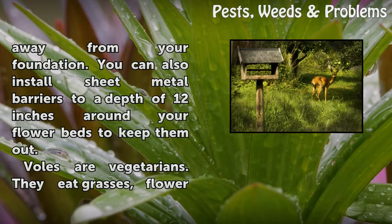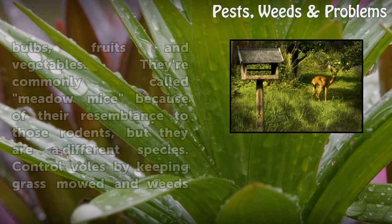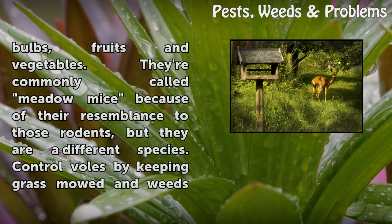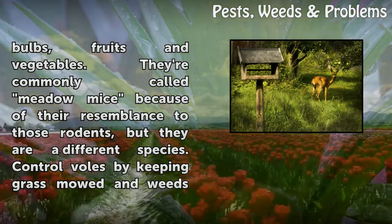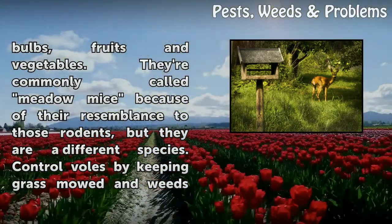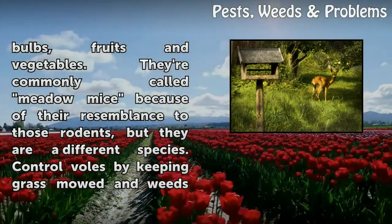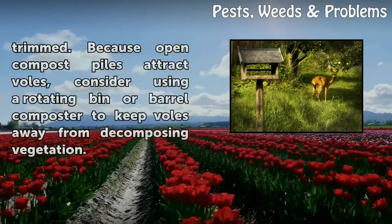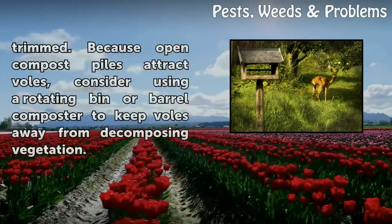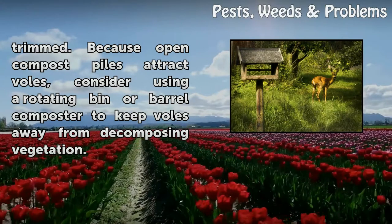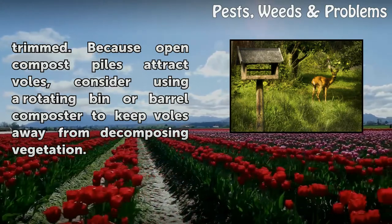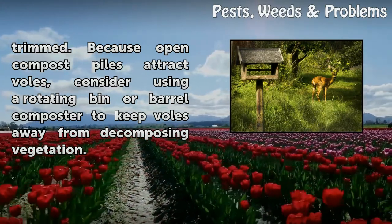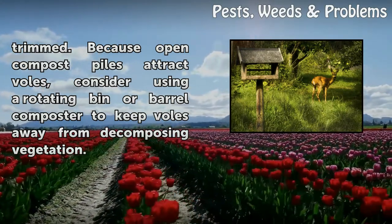Voles: voles are vegetarians that eat grasses, flower bulbs, fruits, and vegetables. They're commonly called meadow mice because of their resemblance to those rodents, but they are a different species. Control voles by keeping grass mowed and weeds trimmed. Because open compost piles attract voles, consider using a rotating bin or barrel composter to keep them away from decomposing vegetation.